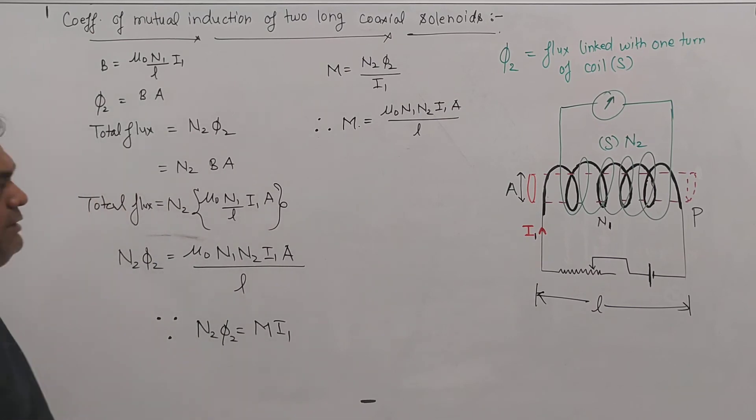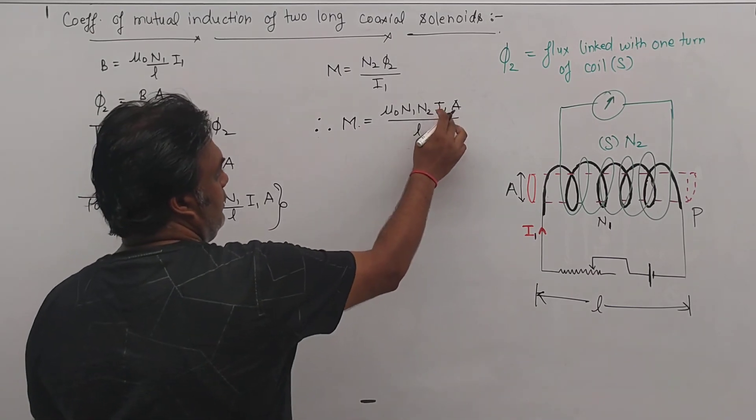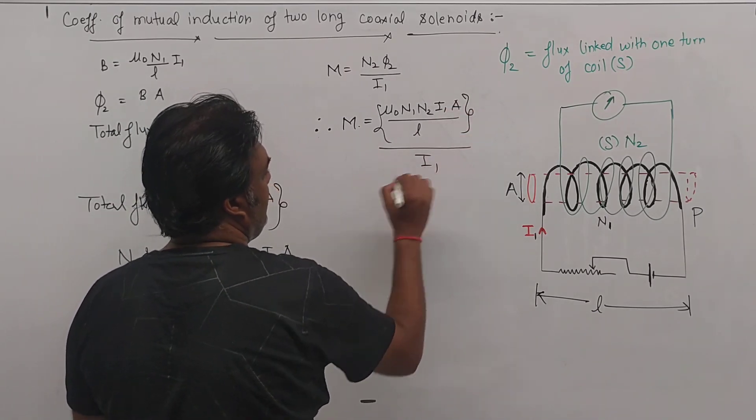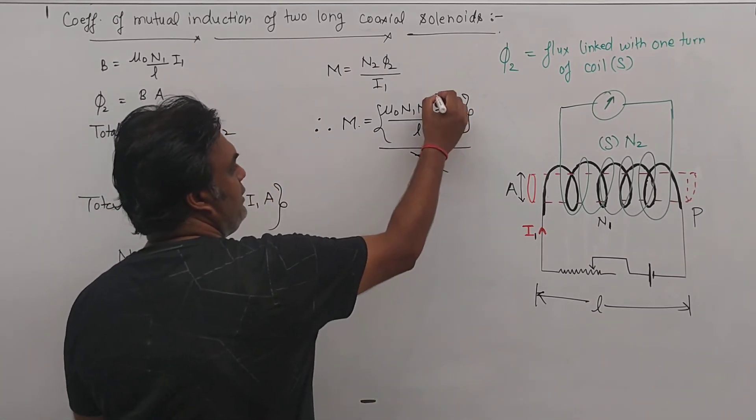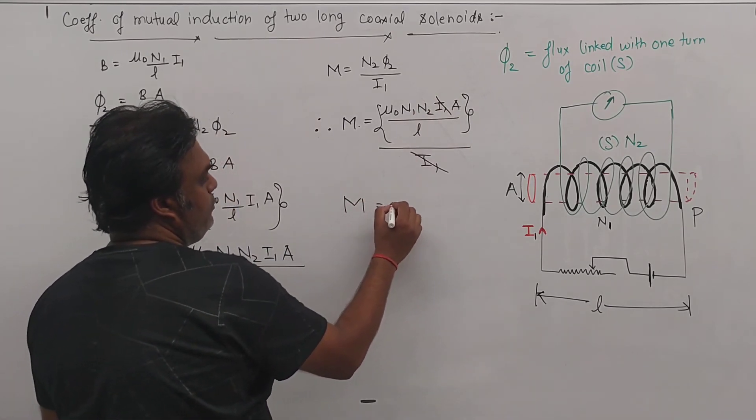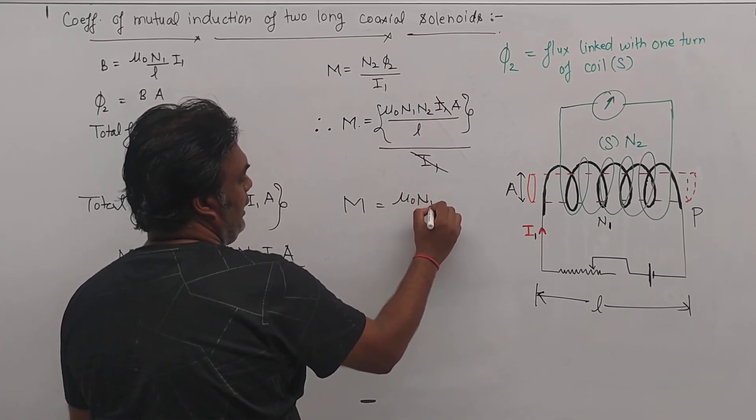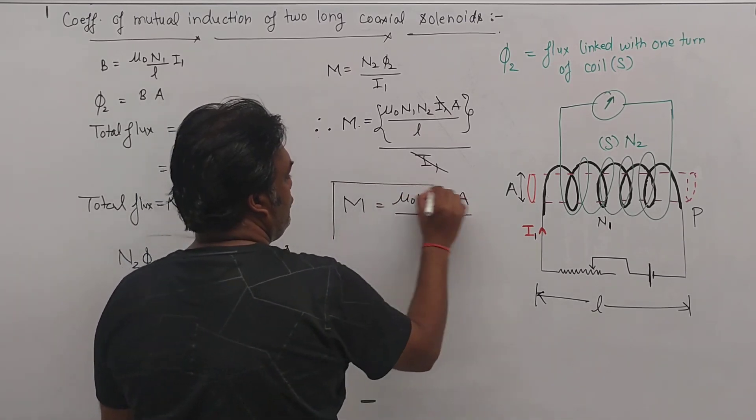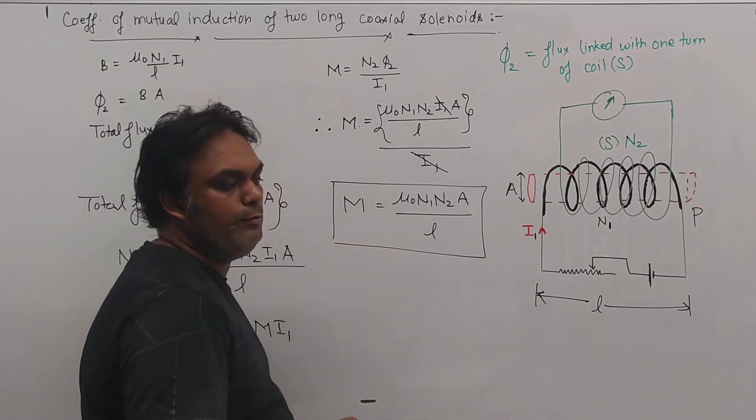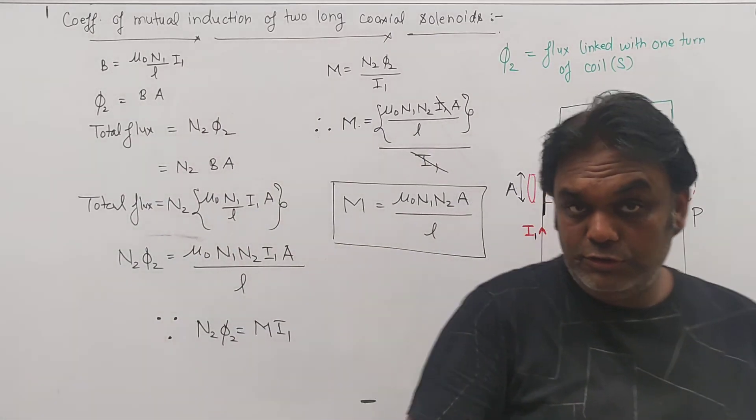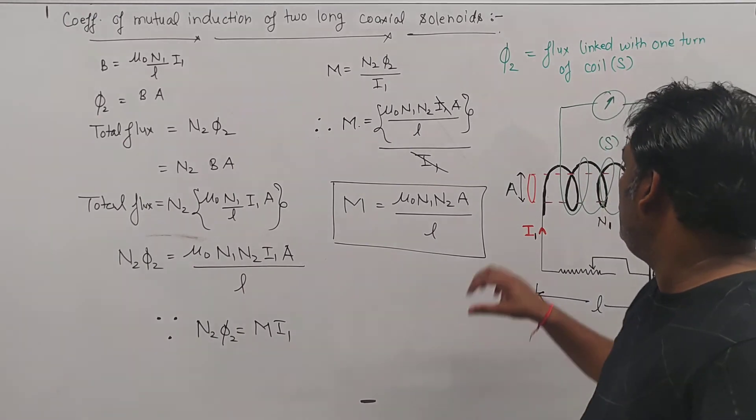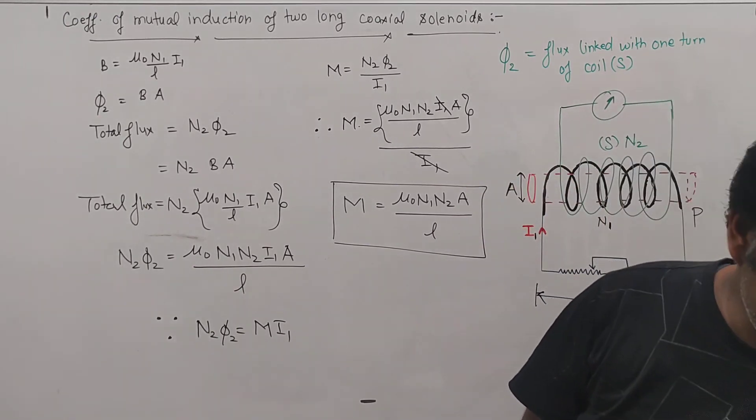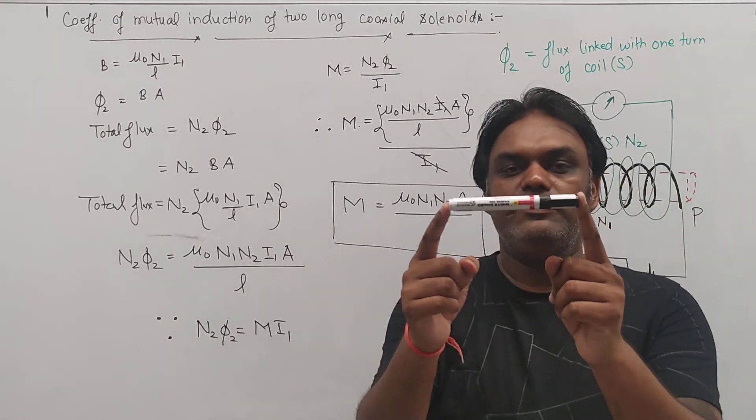Divided by current i1. So this i1 and i1 cancelled out. So M = μ₀n₁n₂A/l. So this is the coefficient of mutual inductance of two coaxial solenoids.